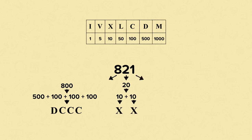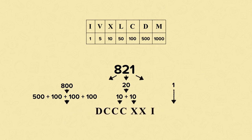And now just the 1 — to make 1 is just I. When we recombine these Roman numerals, we can see that 821 in Roman numerals is D, C, C, C, X, X, I.